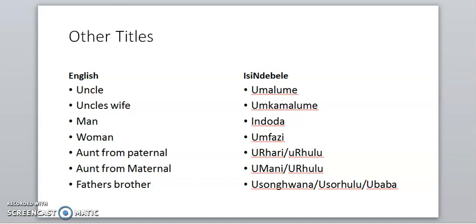Father's brother — this is where more conflict arises along with uhari and umani. Your father's brother is usunguana, usohulu, or ubaaba. The most appropriate and correct word to use from the beginning is ubaaba, because you cannot separate your father's brother from your father — they are both your father, that's how we were raised. However, usohulu refers to the older brother of your father, and usunguana refers to the younger brother of your father.